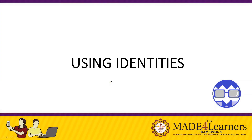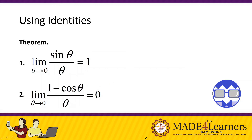Let's go to the third method: using identities. As a brief review, first we have the factoring method, then theorems involving infinity, then conjugates, and now identities. When we talk about identities, this involves trigonometric functions and some exponential functions. Let's familiarize ourselves with the theorems involving trigonometric functions.